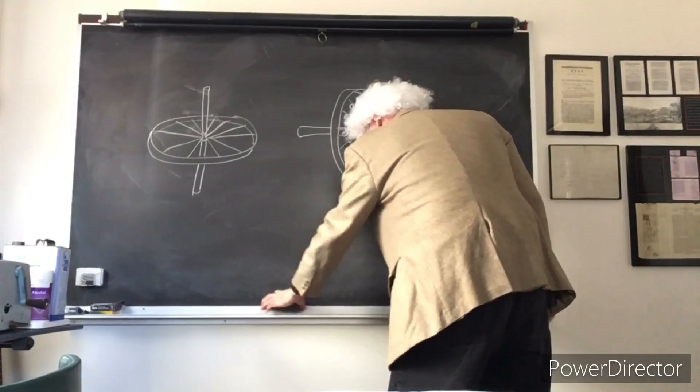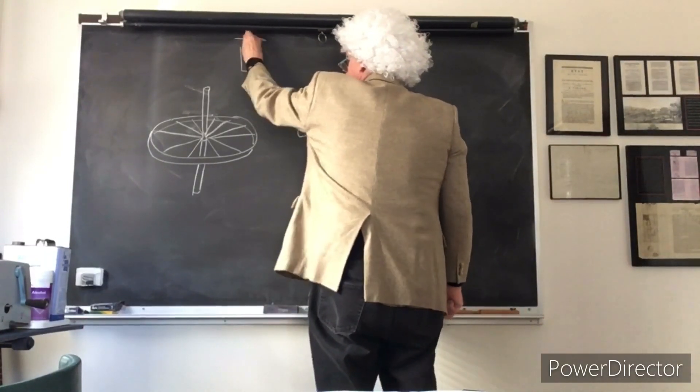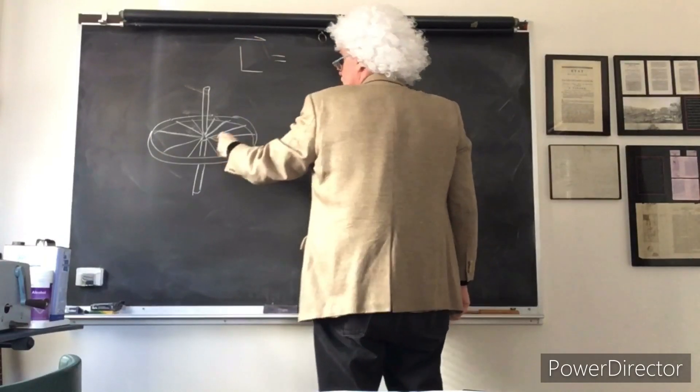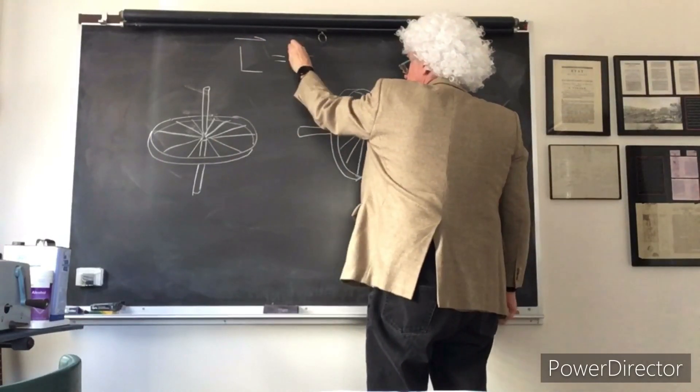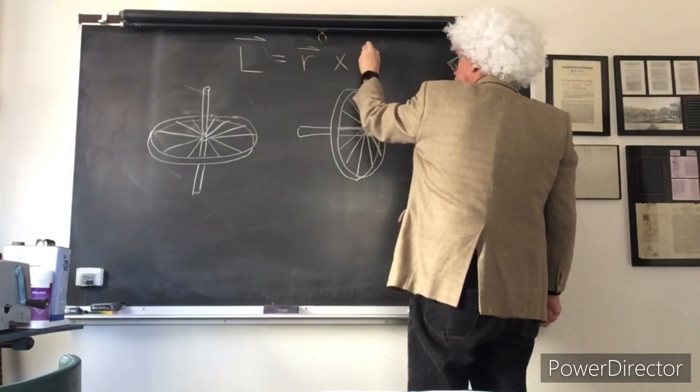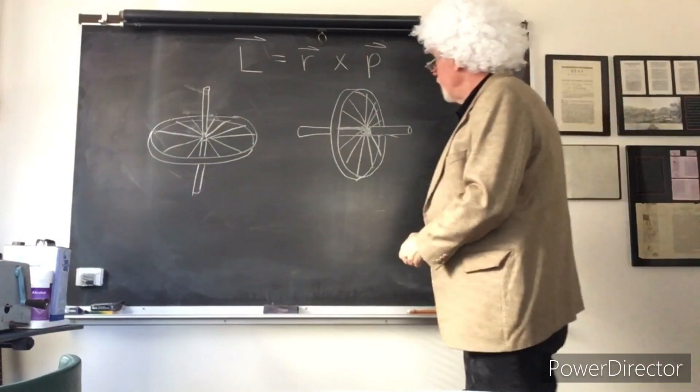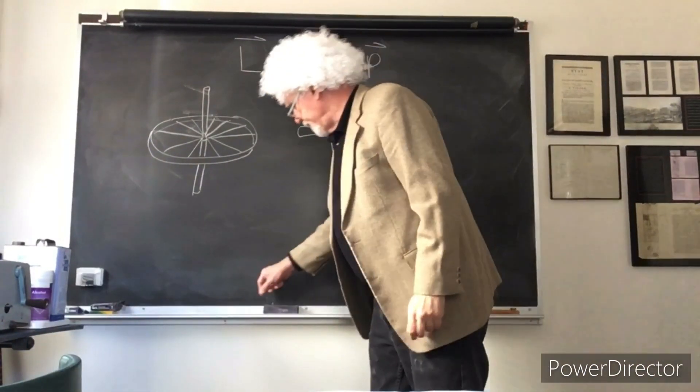Remember our initial equation is angular momentum L equals the radius R crossed with the momentum P. Okay, so let's put on the radius on here.